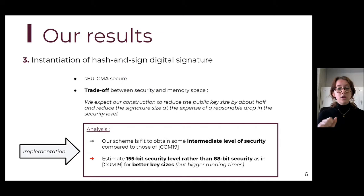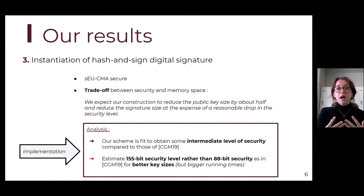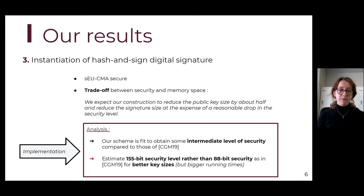For example, to obtain a 155-bit security level we can have better key sizes than those obtained for 88-bit security in the F-trapdoor construction. However, this comes at the price of bigger running times. Moreover, we also observe that our scheme can achieve intermediate security levels with more balanced object sizes than the F-trapdoor construction. The result depends on what security level we want to aim at.